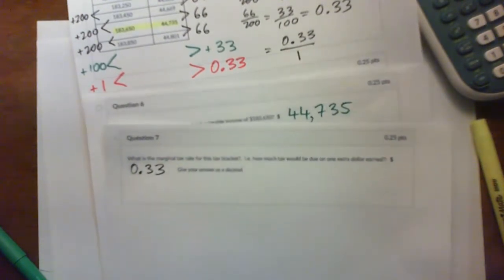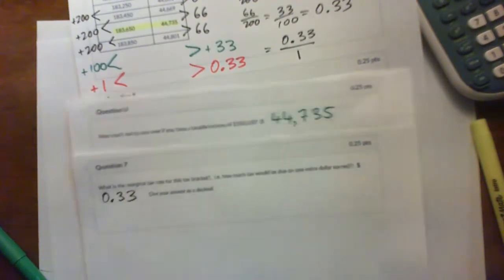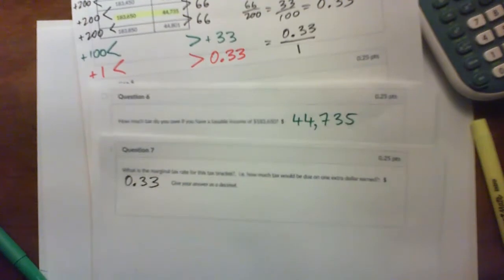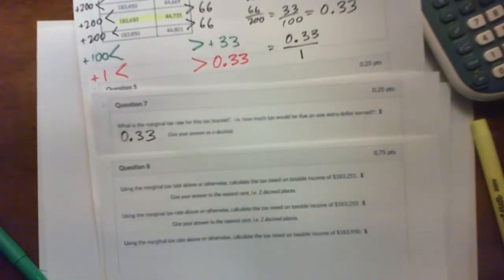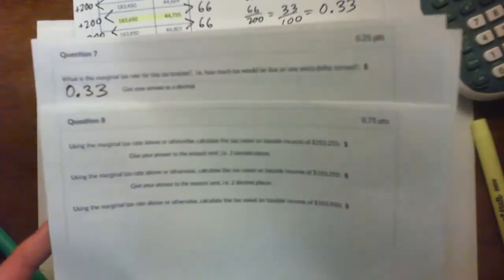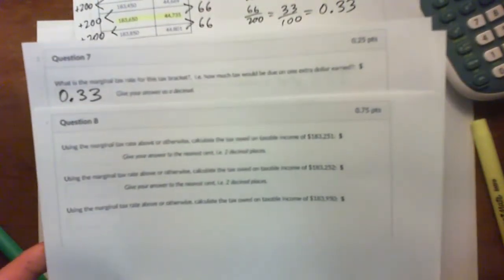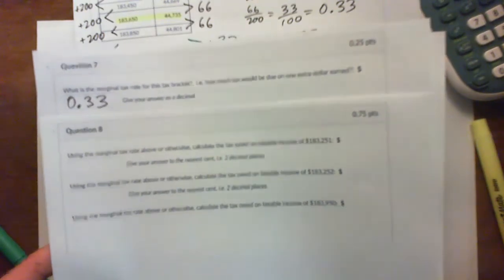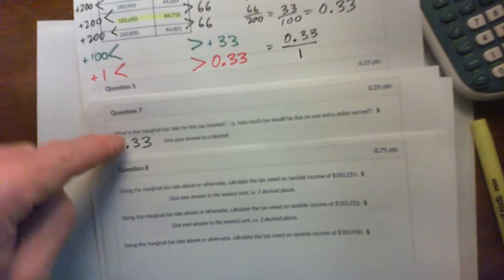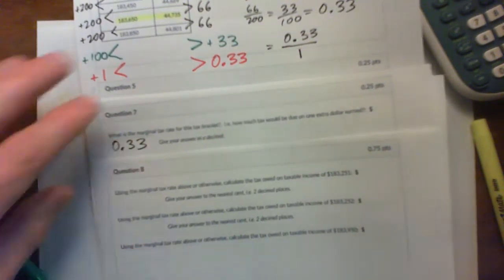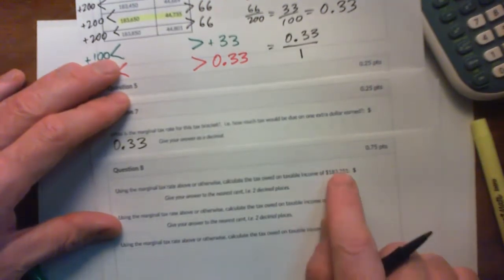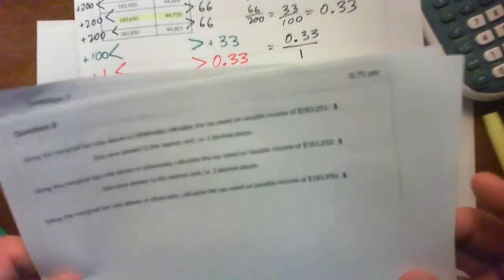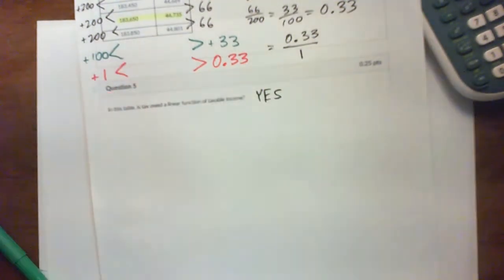Give your answer as a decimal: 0.33. Now, using the marginal tax rate above, calculate the tax owed on a taxable income of $183,251. We established that the marginal tax rate is $0.33. What we want to know first is how many dollars that is above $183,250, because there are different tax brackets for different levels.